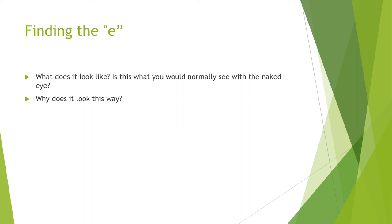Now, to the part of the lab you'll actually be doing. You're going to be using a microscope simulation. The first activity is called finding the E — you're going to be finding a typed letter E on the microscope. When you're looking at the E through the microscope, keep these questions in mind: What does it look like? Is this what you would normally see with the naked eye? And why does it look the way it does?